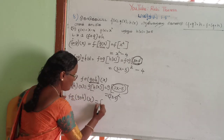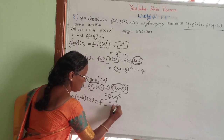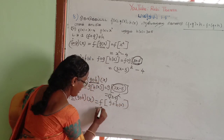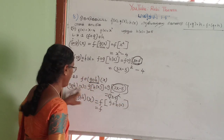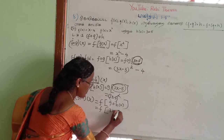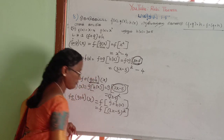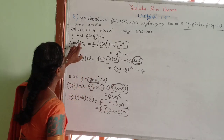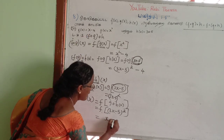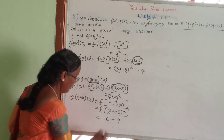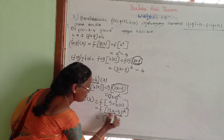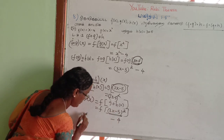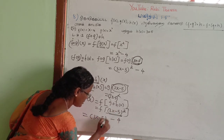F of G of H of X — now F of X is the same thing. F of X is X minus 4. So if X is replaced the same way, then 3X minus 5 holds. Both sides give the same result.